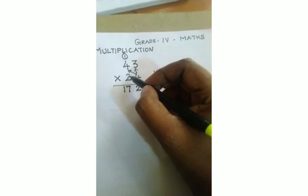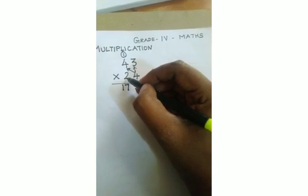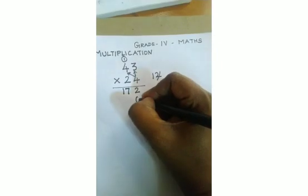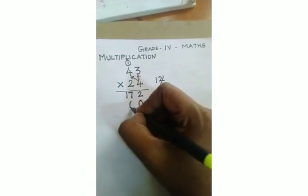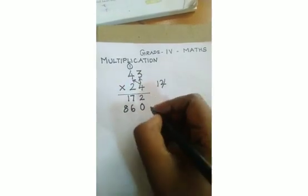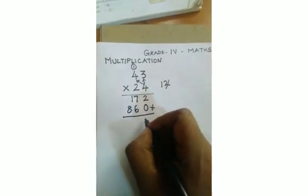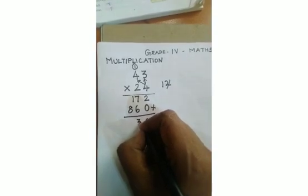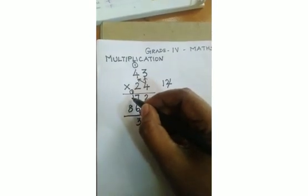Now you are going to multiply 2 with 3 and 4. Since 2 is in the place of tens, in the ones place you write 0 first, then you start. 2 into 3 is 6. 2 fours are 8. Then you add: 2 plus 0 is 2, 6 plus 7 is 13, you carry 1 to the hundreds column, then 8 plus 1 is 9, 9 plus 1 is 10. Now your answer is 1032.